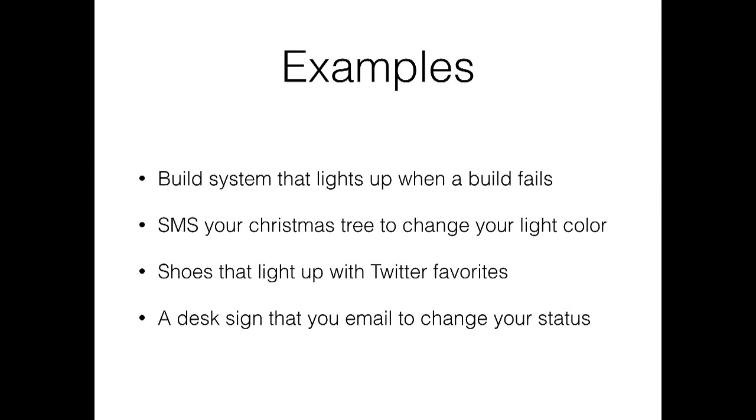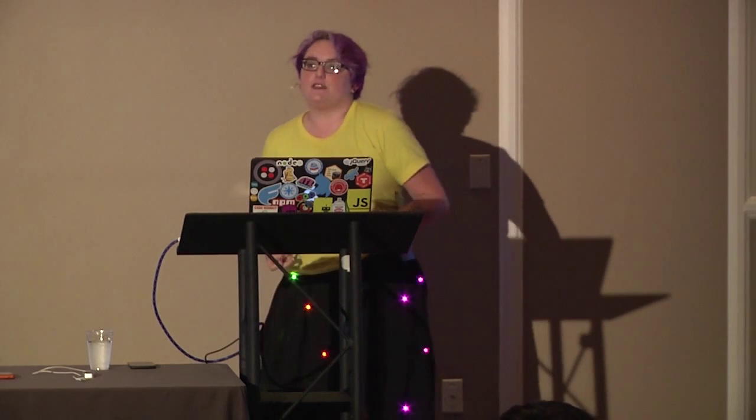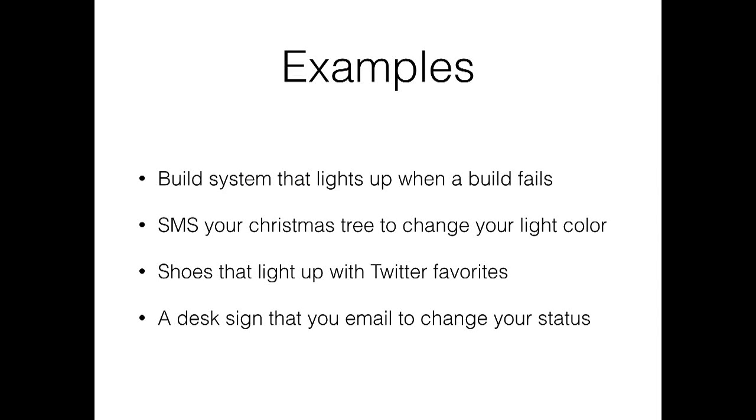I've seen someone implement text messaging their Christmas tree to change the light color. I have something similar — I put LEDs on the railing of my porch for an apartment decorating contest, put up a URL, and if you went to the URL you could input a color and it would change the color of the lights. They informed me I'm winning. Also, these shoes I'm wearing are pulsing white right now, and when anybody favorites something on my Twitter feed, they flash gold for a few seconds. Those are the kinds of ways you can aggregate data from a different source and create an interesting interaction between you and robotics. And the last example is a desk sign you can email to say you're in a meeting or at lunch — a little electronic sign that tells people where you are.